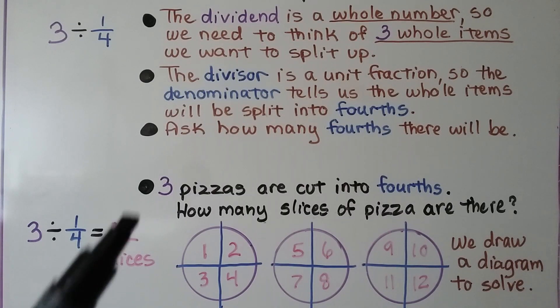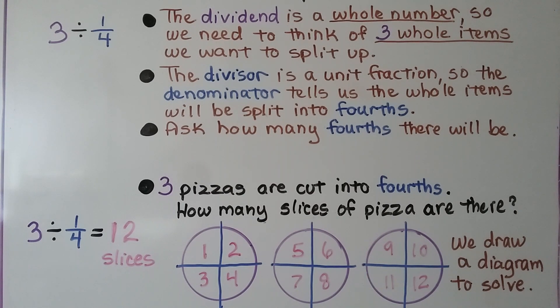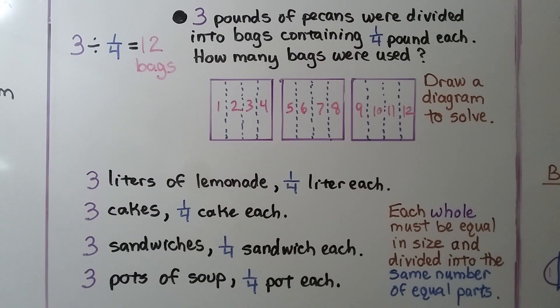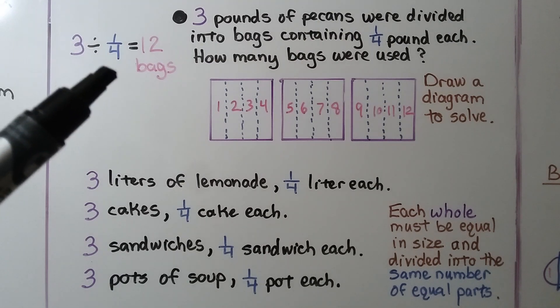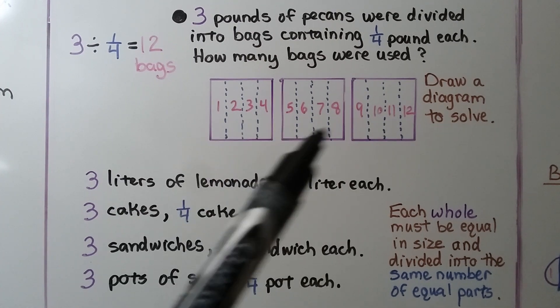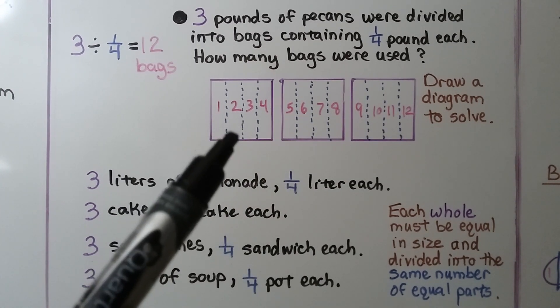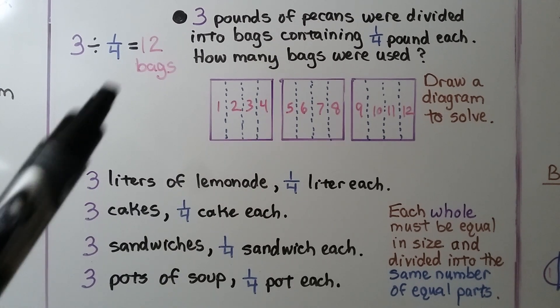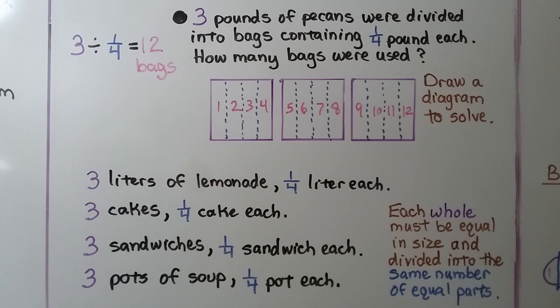We can write 3 pizzas are cut into fourths, and how many slices of pizza are there. We draw a diagram to solve it. We draw 3 separate pizzas, we split each one into fourths, and we see there are 12 slices. So 3 divided by 1 fourth is equal to 12. We could also write a story problem that says 3 pounds of pecans were divided into bags containing 1 fourth pound each. How many bags were used? We can draw 3 squares to show the 3 pounds of pecans. We can divide each square into 1 fourth parts. We can see there are 12 parts. That means there were 12 bags.